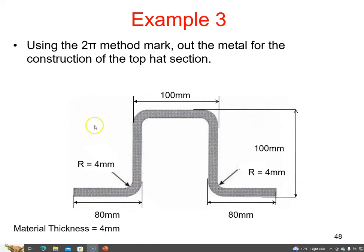In this example, we're going to calculate the amount of metal required to make this aluminium piece. We're told the bend radius is 4 millimetres, the material thickness is also 4 millimetres, and the dimensions are 80 millimetres here and 100 millimetres at the top and at the sides.